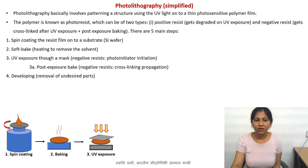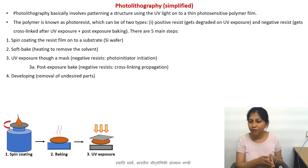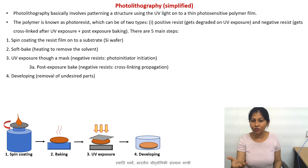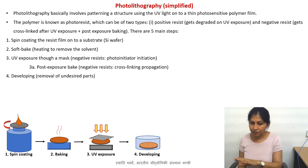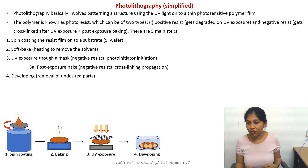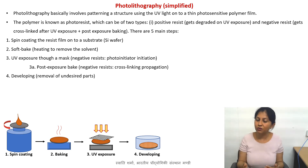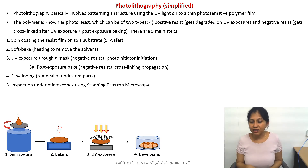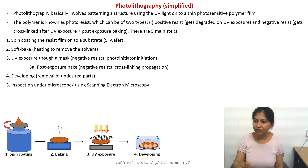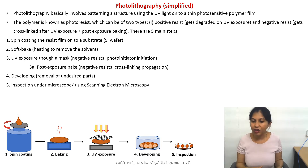The next step is develop. Developing the structure means — for example, where some parts are cross-linked — the developer, which is usually a chemical that comes with a certain photoresist (different brands and types of photoresist will have a certain chemical used for developing), will dissolve the parts that are not cross-linked while the cross-linked parts remain. In the case of positive resist, the degraded parts will dissolve and the non-degraded parts will remain. After developing you wash the wafer, typically with isopropyl alcohol and other chemicals depending on the resist.